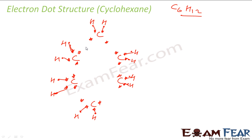Now I can join these two carbons, these two carbons, and these two carbons. If you see, each carbon now has eight electrons. This carbon had four, got two from sharing with hydrogen — two plus four is six — plus one from this carbon and one from this carbon: six plus two is eight. So each and every carbon has eight electrons. They are all saturated and happy.